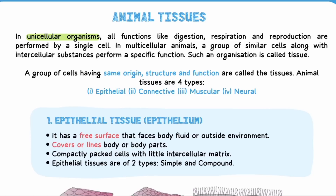There are two types of organisms: Unicellular Organisms and Multicellular Organisms. In unicellular organisms, all functions like digestion, respiration, and reproduction happen in one cell. In multicellular organisms, many cells are grouped together. A group of cells with the same origin, structure, and function forms a tissue. In animals, there are four types of tissues: epithelial, connective, muscular, and neural.